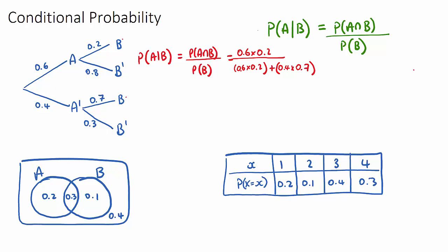In Venn diagram questions, if it says the probability of A given B, we can still use the formula: P(A∩B) over P(B). The intersection of A and B will be the value in the middle — 0.3 — and the probability of B is all the probability inside B, which is 0.1 and 0.3, so 0.4. This gives us 3 over 4.